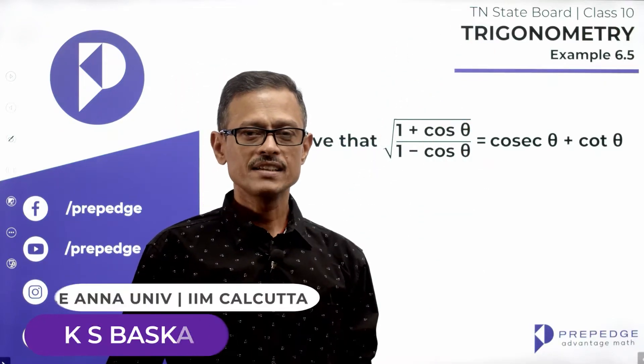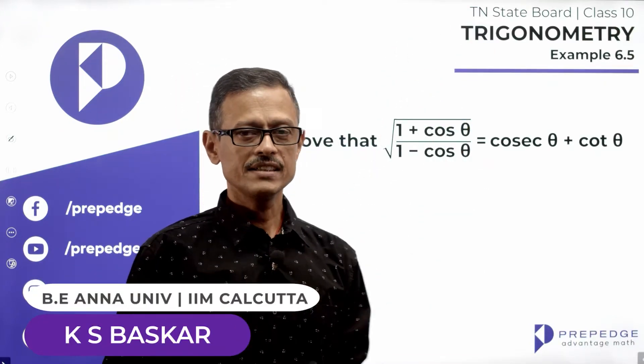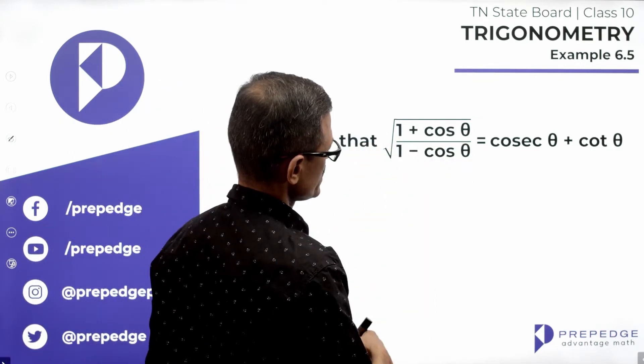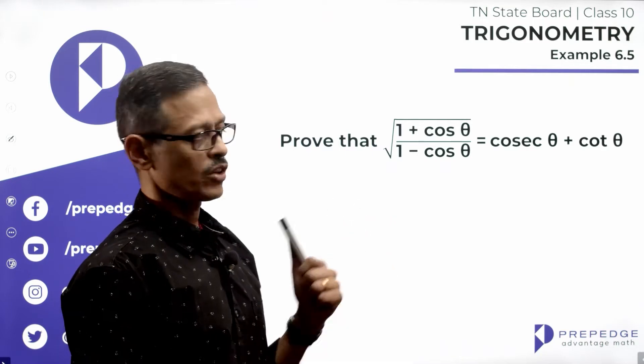Trigonometry chapter example 6.5, Class 10 math. Prove that square root of 1 plus cos theta by 1 minus cos theta is equal to cosecant theta plus cot theta.